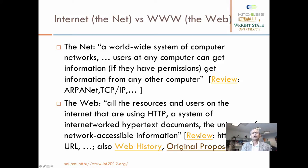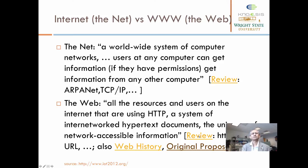There are two key parts: all resources and users on the internet using the HTTP system of internet-work hypertext documents. HTTP allowed for the connection, and what got displayed and presented to the user is the hypertext document. The ability to present documents from any server on any computer on the World Wide Web basically created what is termed a universe of network-accessible information.